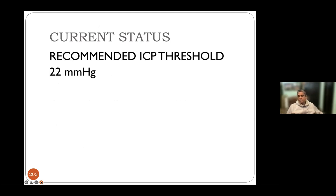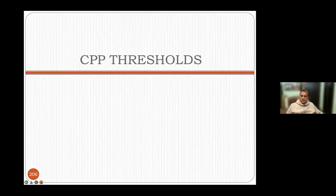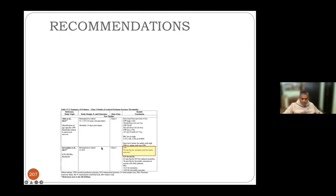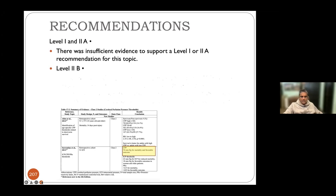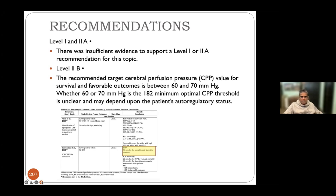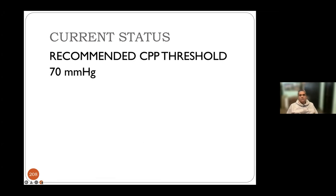CPP threshold: a study of 1,700 patients defines the cerebral perfusion pressure threshold at 70 mmHg. Though there is no level one evidence, a range of 60–70 mmHg is recommended. The recommended CPP threshold is 70 mmHg, with caution when it drops toward 60.